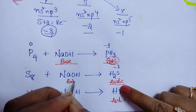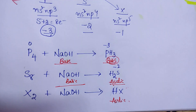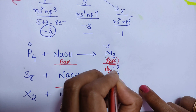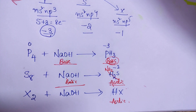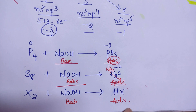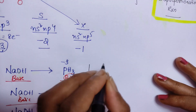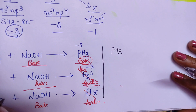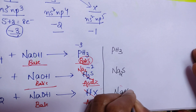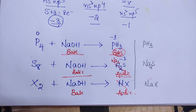Since H2S is acidic and NaOH is basic, neutralization takes place — remove the hydrogens and add sodium to get Na2S. Similarly, HX reacts with NaOH to form NaX: if chlorine then NaCl, if bromine then NaBr, if iodine then NaI. So the products are: PH3 (no further reaction), Na2S, and NaX.